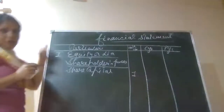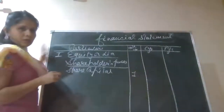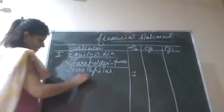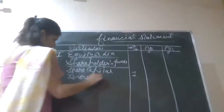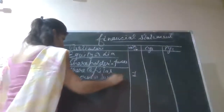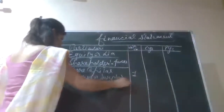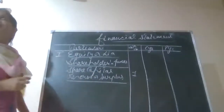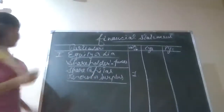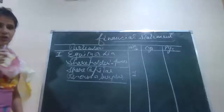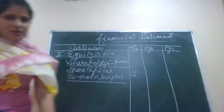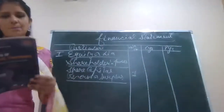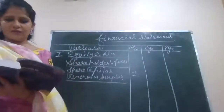Now it's clear, right? So share capital, then we are having reserve and surplus. About reserve and surplus, we read some books — so many types of reserves are there: capital reserve, debenture redemption reserve, and other reserves. We have a big list of those reserves.